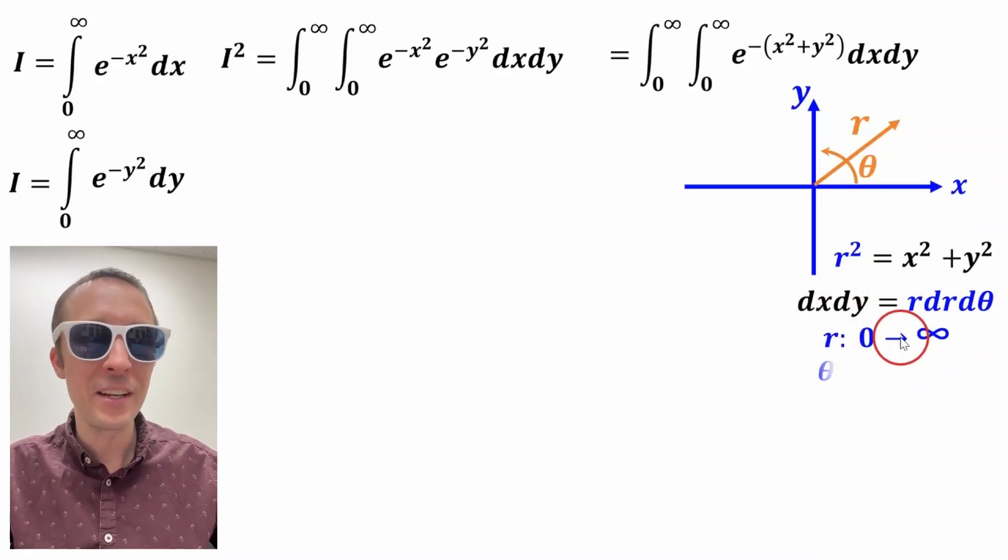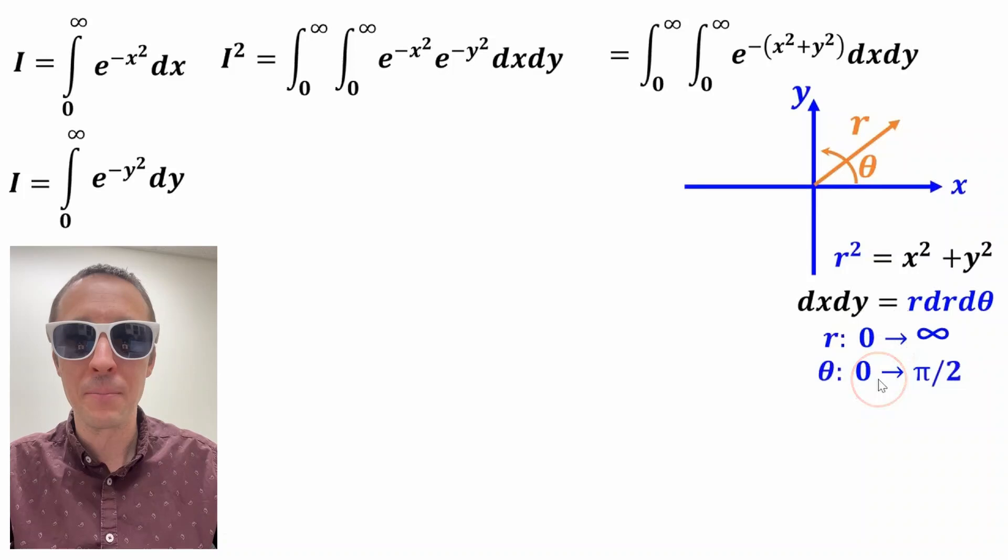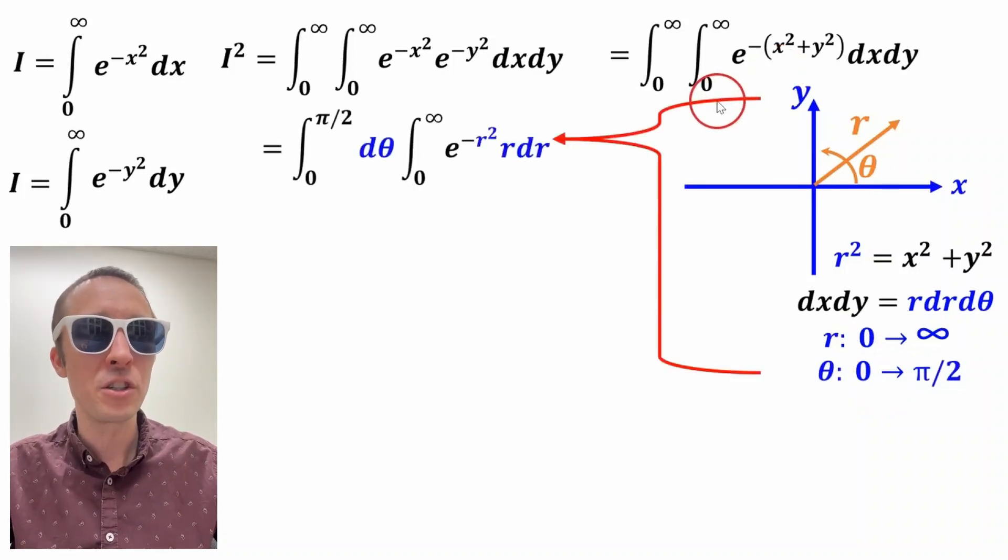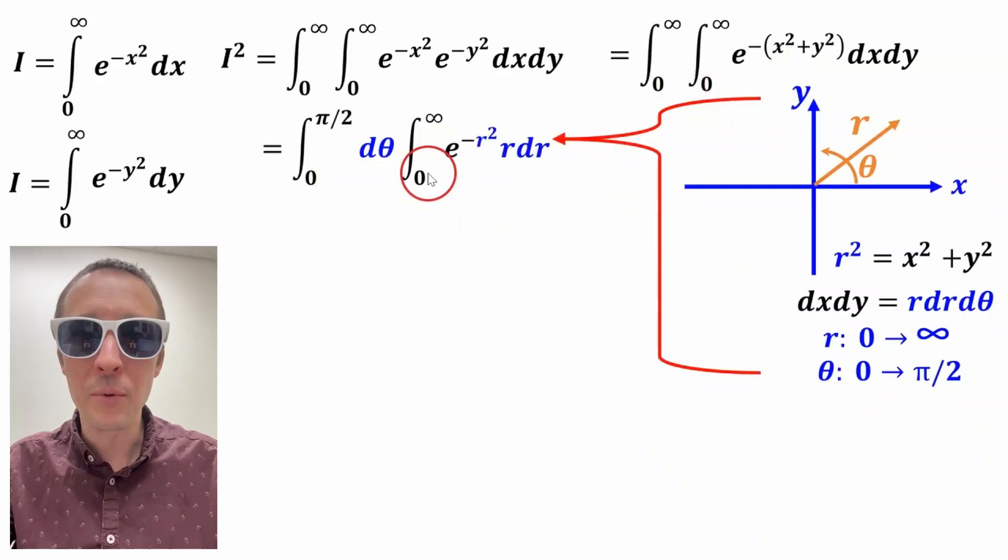And r will go from zero to infinity. And theta will go from zero to pi over two. So if we substitute this in and convert to polar coordinates, this is what we've got right here.